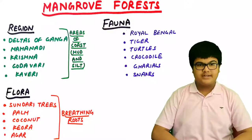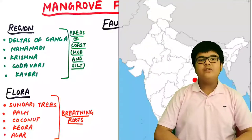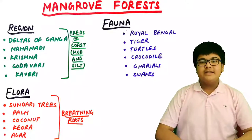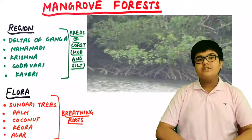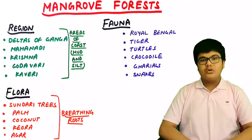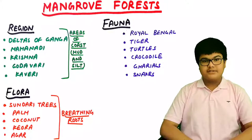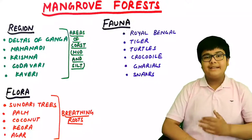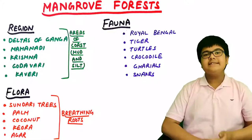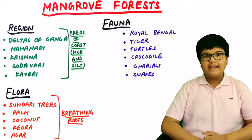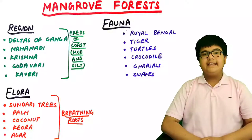Fifth, mangrove forests are found in the deltas of the Ganga, Mahanadi, Krishna, Godavari, and Kaveri rivers. Trees found here include the sundari tree in the Sundarbans delta, palms, coconuts, keora, and agers. These species have large breathing roots. Animals found here include the Royal Bengal tiger, crocodiles, gharials, snakes, and turtles.